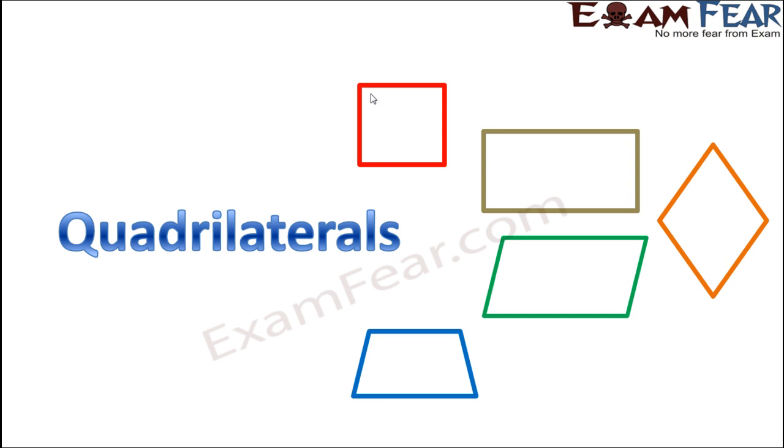Quadrilaterals - we have learned quite a bit about quadrilaterals. These are polygons which have four sides. Now on the screen you can see many different types of quadrilaterals. In some of them, all the sides are equal.